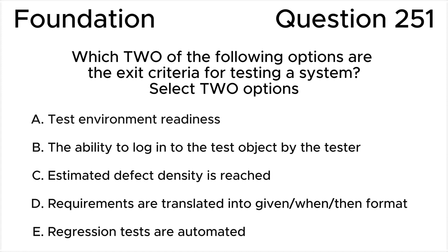ISTQB Foundation Level Question 251: Which two of the following options are the exit criteria for testing a system? Select two options. A: Test environment readiness. B: The ability to log in to the test object by the tester. C: Estimated defect density is reached. D: Requirements are translated into given/when/then format. E: Regression tests are automated.